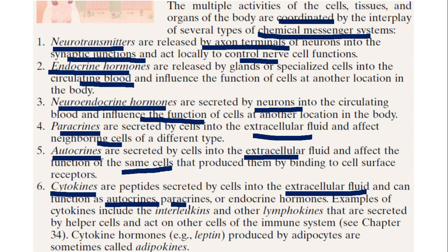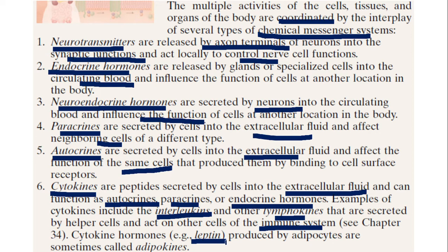sometimes paracrine or even endocrine hormones. Examples are interleukins and other lymphokines, secreted as part of the immune system of the body. You also have leptin, a cytokine hormone produced by adipocytes — also called adipokines. In this chapter, we give prominence to the endocrine hormones, while others may be slightly mentioned alongside them.